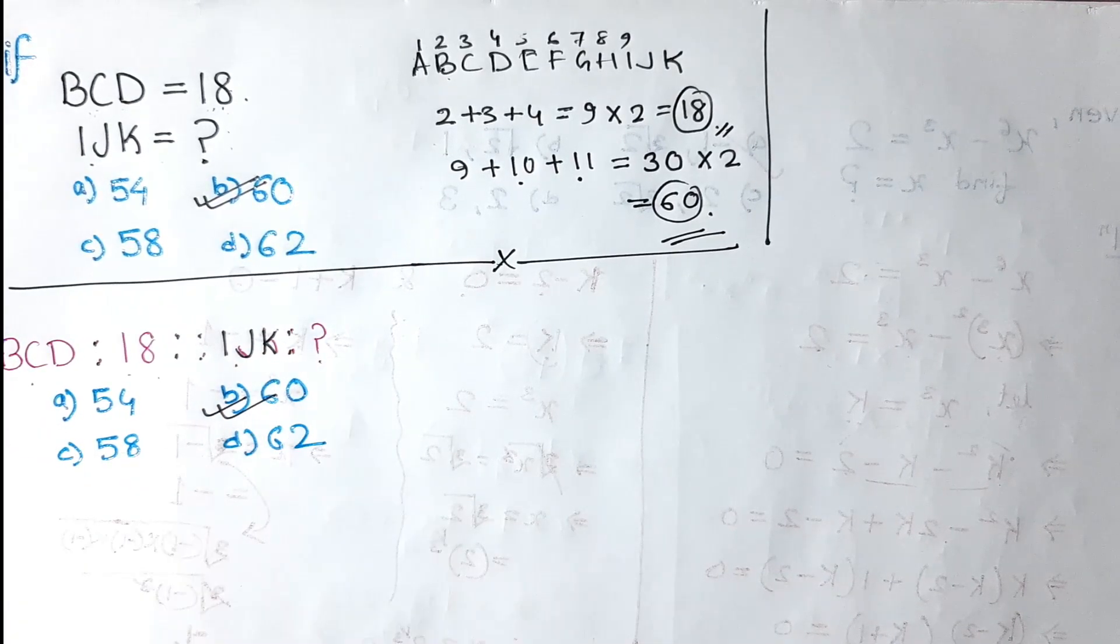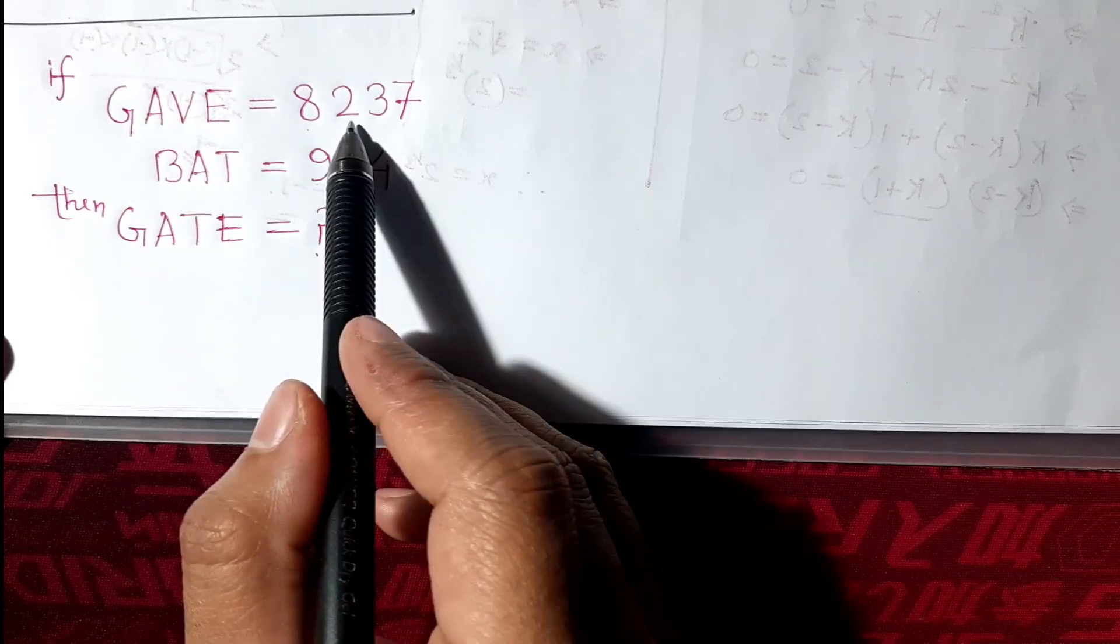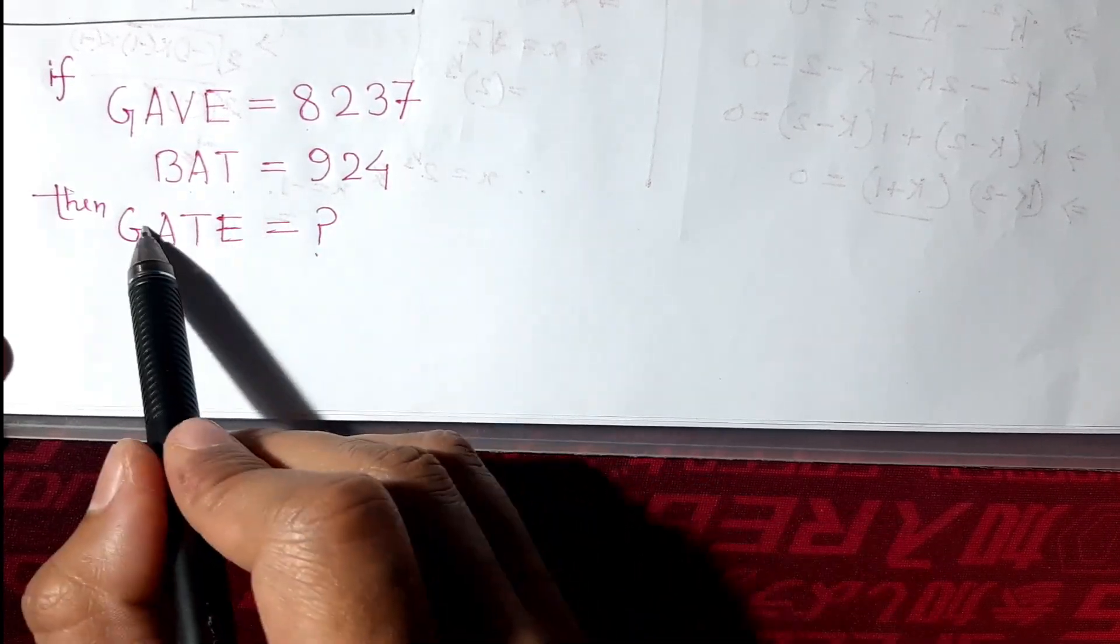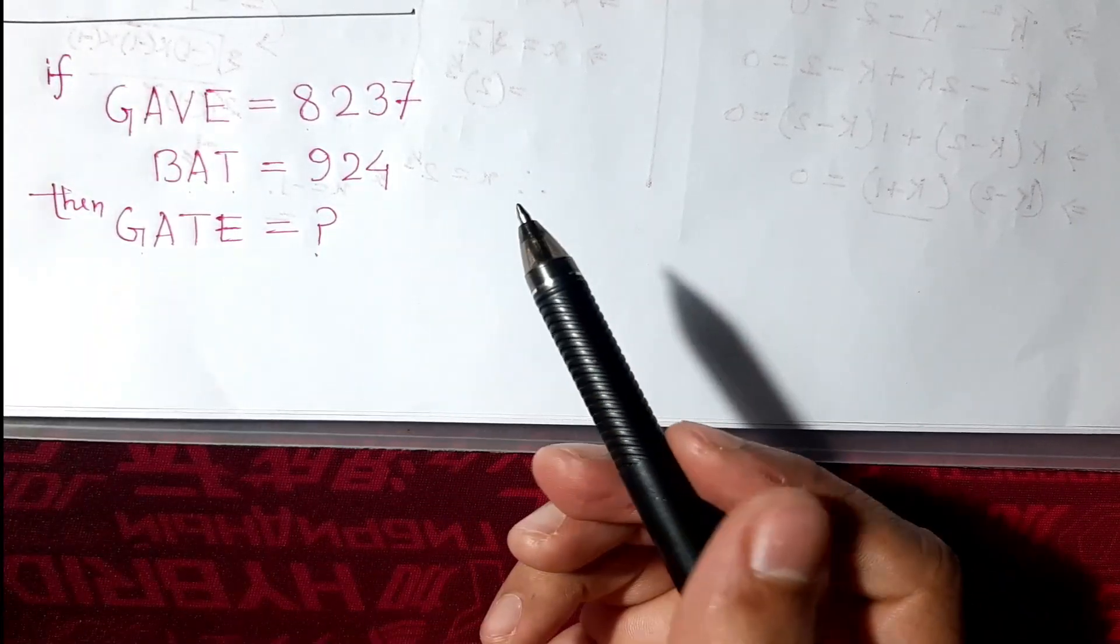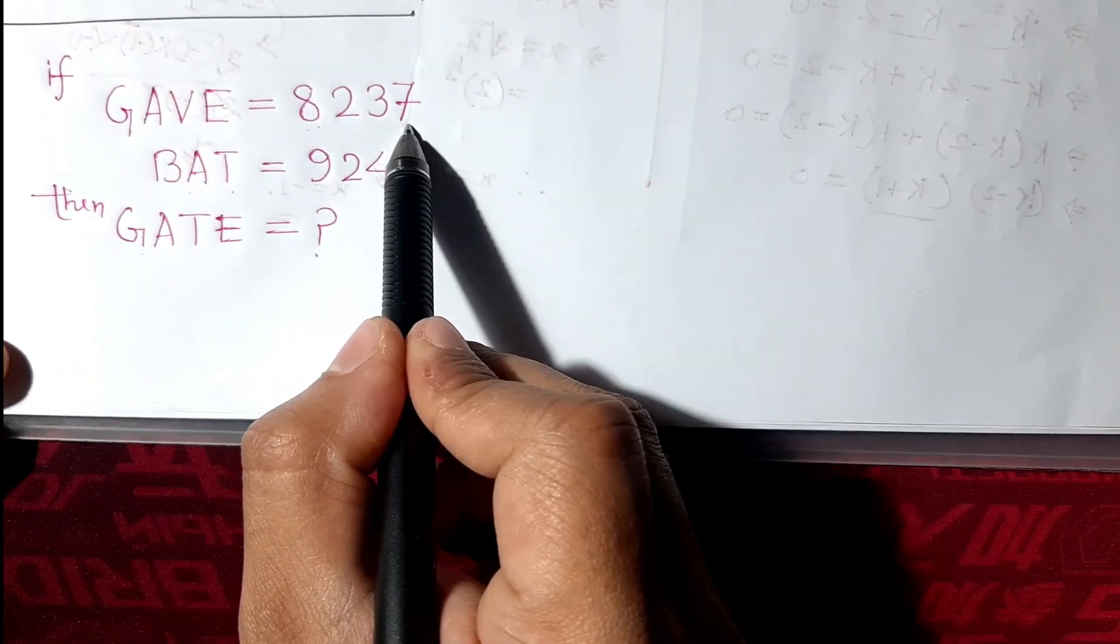Next, we are given GAVE equals 8237 and BAT equals 924. When you find out the code of GATE, so first we'll check. Here is four alphabets and we have four digits. Here, three alphabets, here three digits.